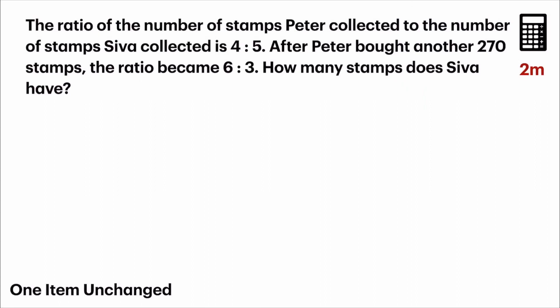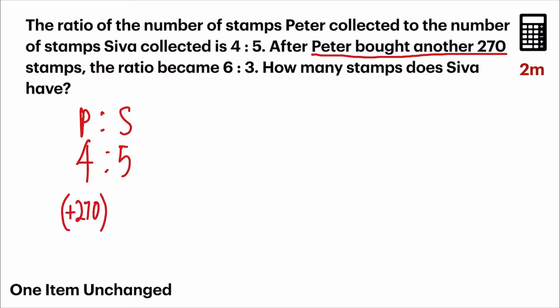The ratio of the number of stamps Peter collected to the number of stamps Siva collected is 4 is to 5. This question is different from the previous ones where one item was subtracted — in this case, Peter bought another 270 stamps, so it's an addition of 270. The ratio became 6 is to 3. Nothing happened to Siva, but the ratio changed. For Peter, he had 4 units at first but it became 6. So one item changed — that's Peter. Siva remained unchanged, so we deal with Siva's ratio.